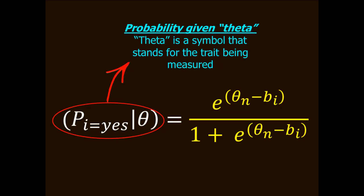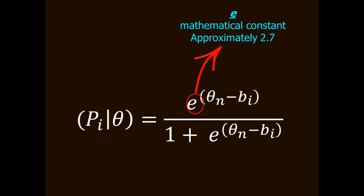Theta here is a stand-in for the level of trait that is being measured. So if you were measuring shoulder function, theta tells you how much shoulder function we're talking about. If you're measuring pain, theta tells you how much pain we're talking about.